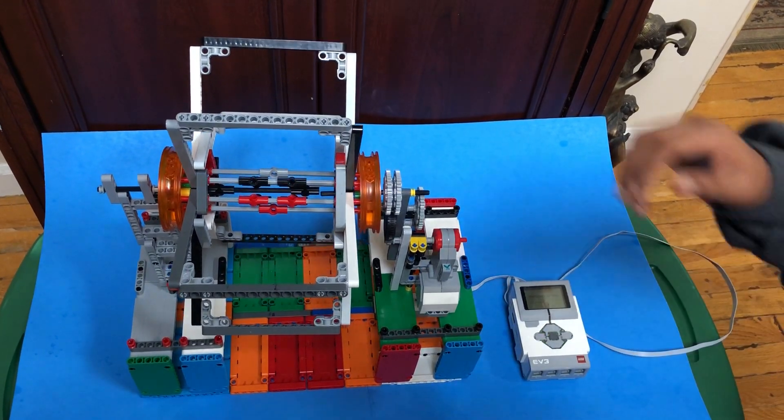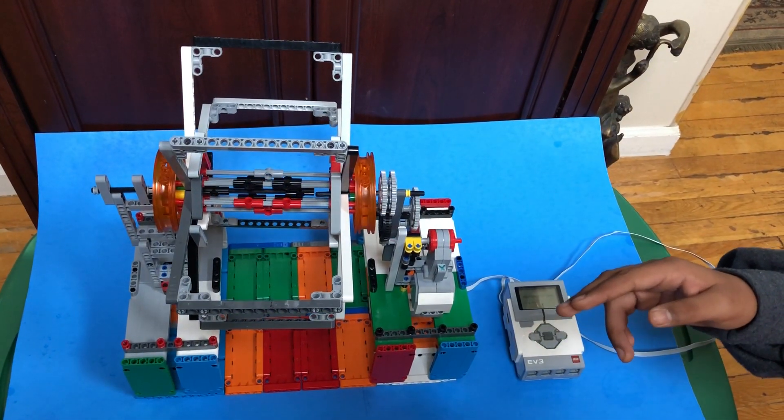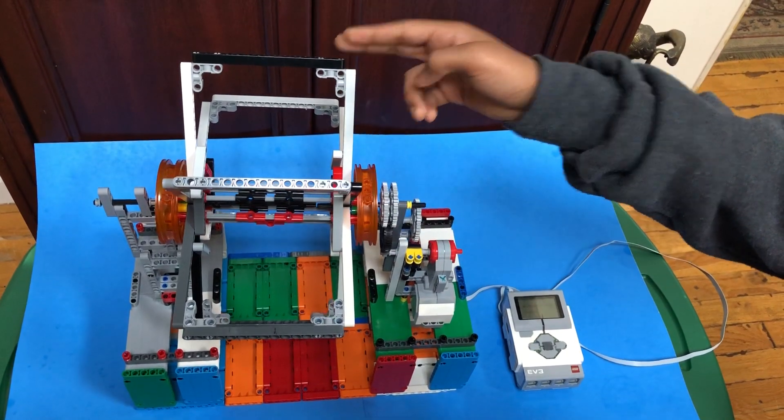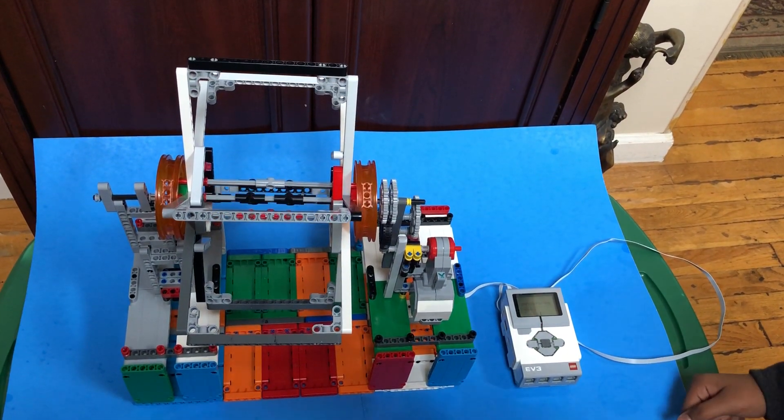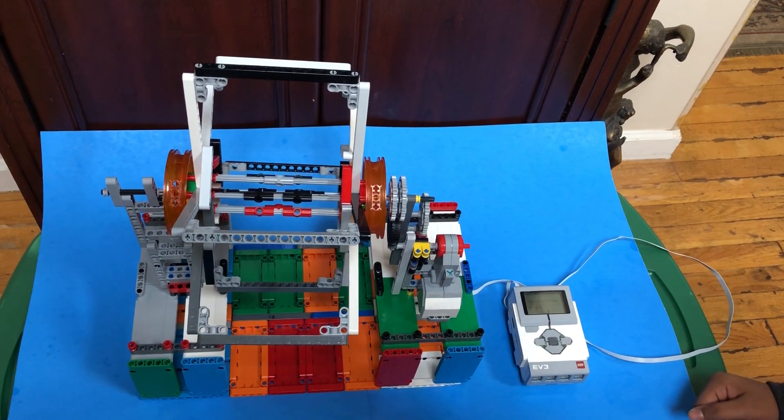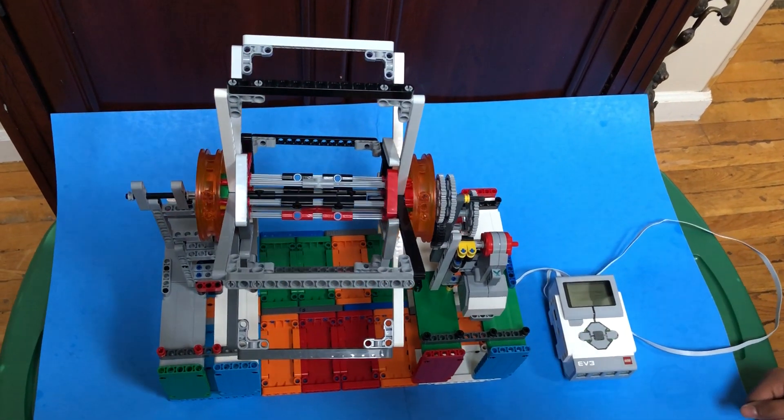You can connect the specimen that you would like to be doing the microgravity experiment on to any of these beams. And since the clinostat has a very high gear ratio, it has a lot of torque, so it can move reasonably heavy specimens.